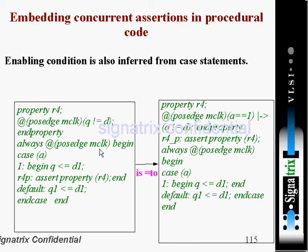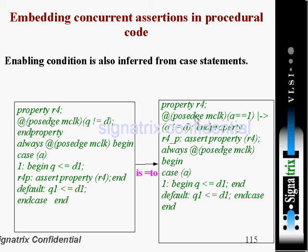Now look at this: an enabling condition can also be inferred from case statements. Here we are using property r4 at posedge of clock: if q is not equal to d. Inside an always block, we use a case statement. In one of the case expressions where the case expression equals one, we define 'assert property r4'. Then we have a default statement. This is the case statement residing in the always block.